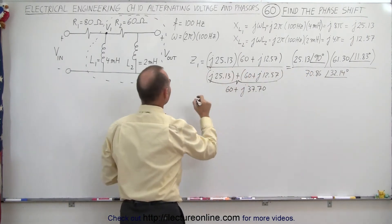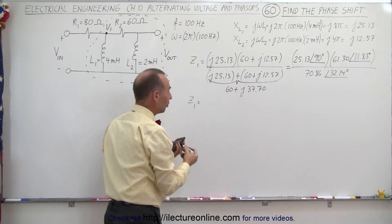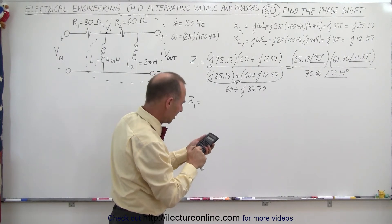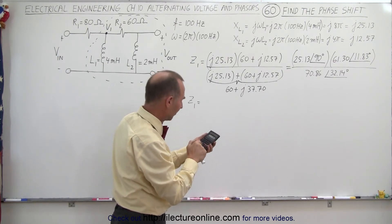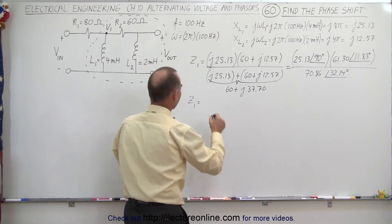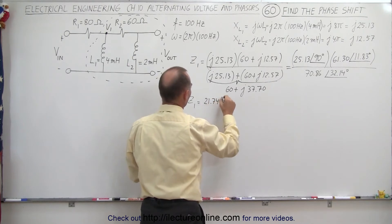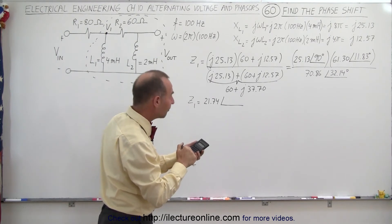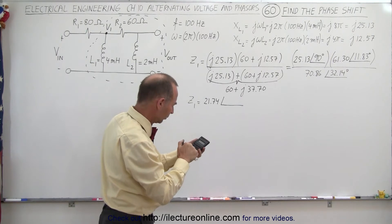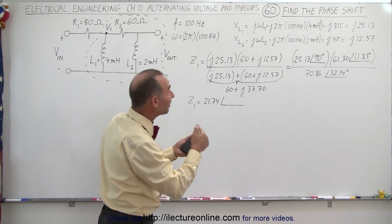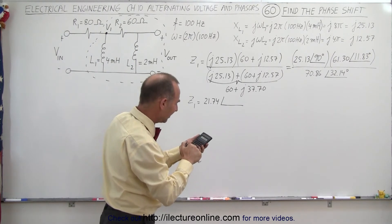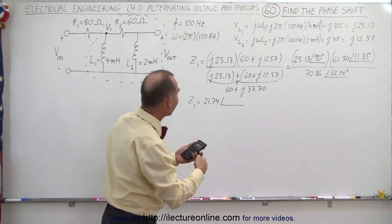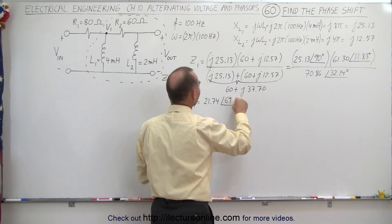So now we can go ahead and calculate the impedance Z1. For the magnitude we get 25.13 times 61.3 divided by 70.86, which equals 21.74. With a phase angle of 90 plus 11.83, that's 101.83 degrees, minus 32.14, which equals 69.69 degrees.